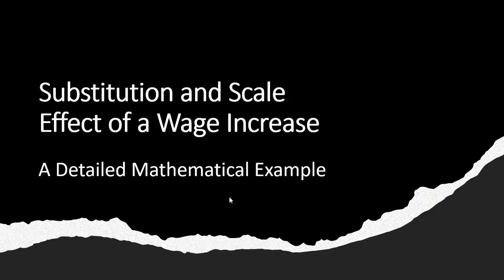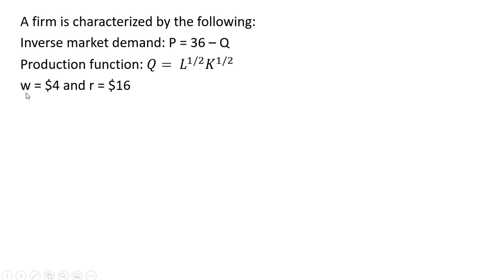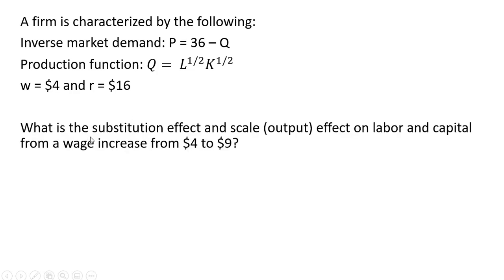In this video we're going to look at the substitution and scale effect of a wage increase using a detailed mathematical example. Here we have a firm that faces the following inverse market demand, has the following Cobb-Douglas production function, and has input prices where the wage is $4 per unit and the price of capital R is $16 per unit. We want to find the substitution effect and scale effect on labor and capital from a wage increase from $4 to $9.